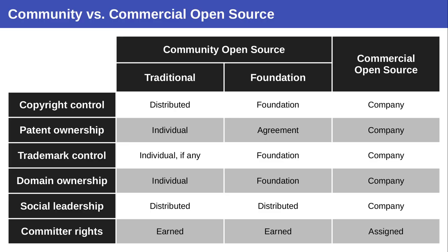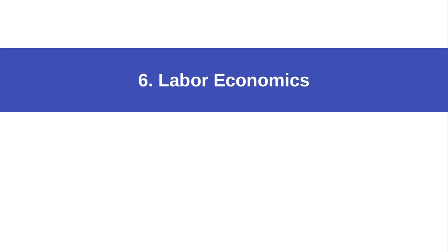Commercial open source firms maintain control through several mechanisms: they maintain all copyright, don't license out patents, own all trademarks and associated domains, and employ the developers, keeping social leadership with the company — controlling commit rights. In the worst case, the project is even developed behind closed doors and simply dumped onto the world, which is not a nice style, but some companies do it.